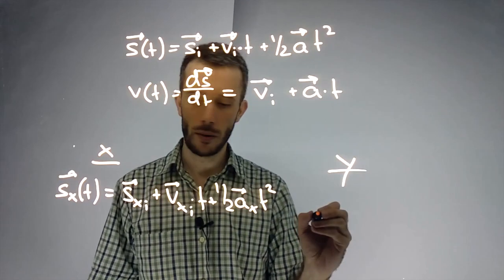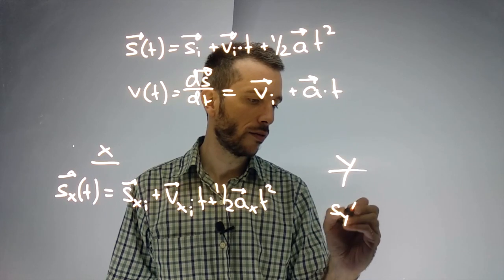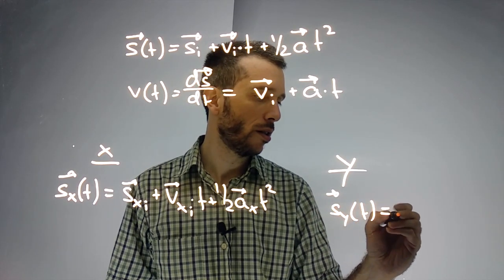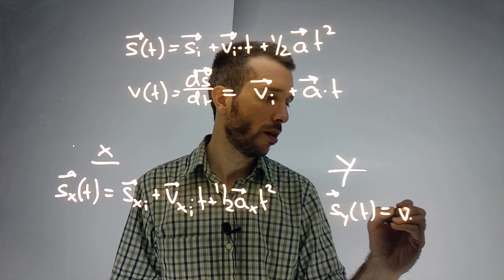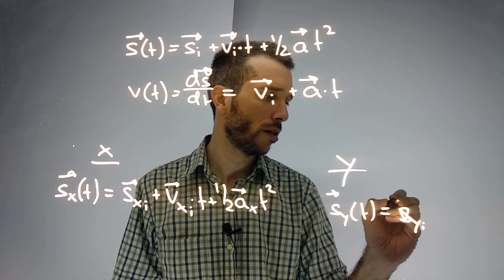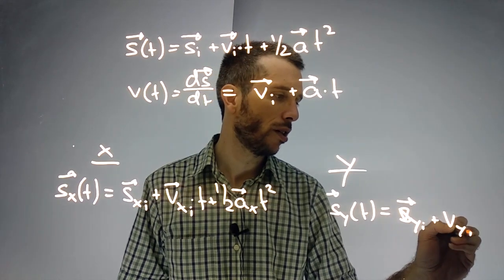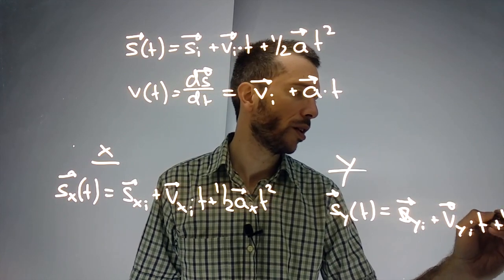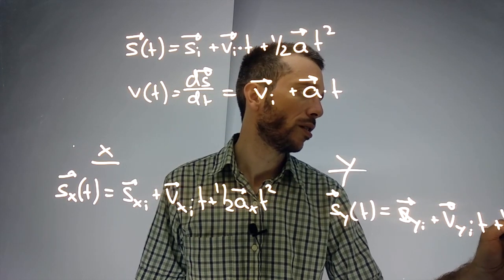And in y, I have the same thing. Y as a function of time is y-initial plus v y-initial times time plus one-half a y times t squared.